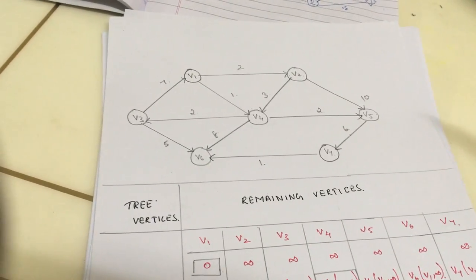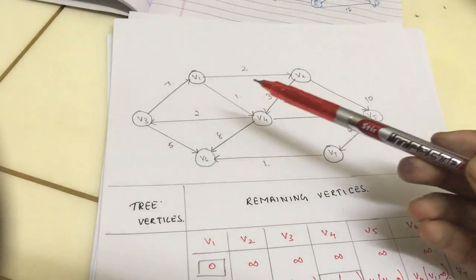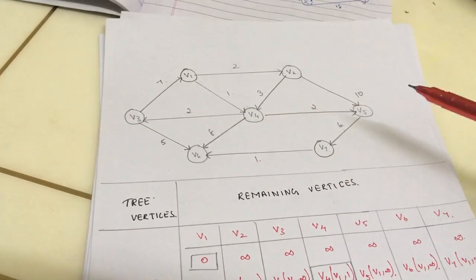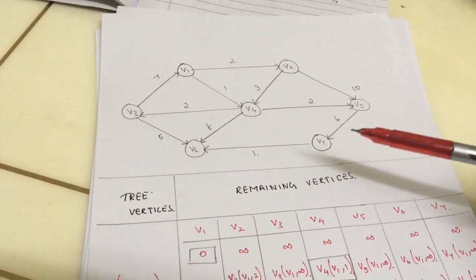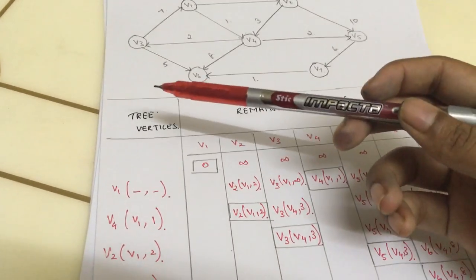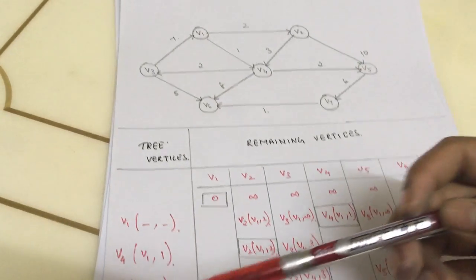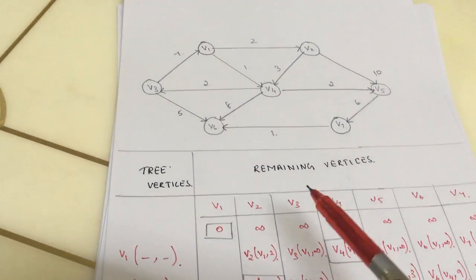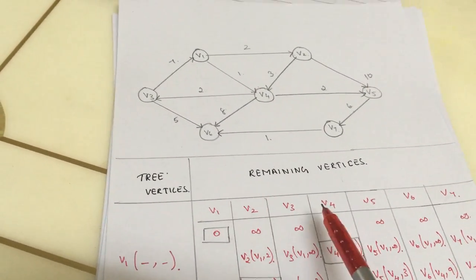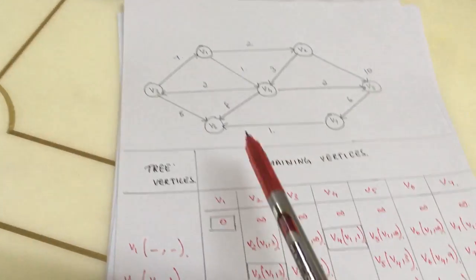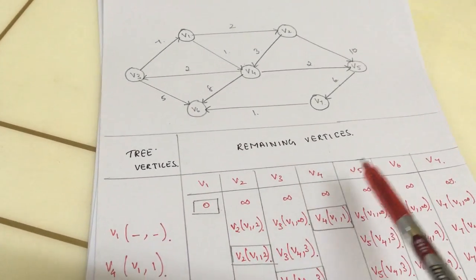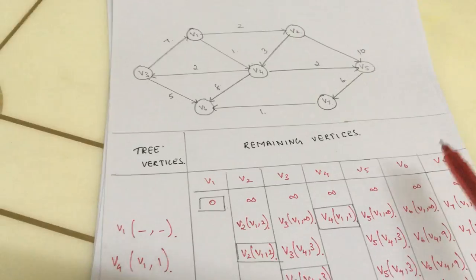We will see the second example with 7 vertices: v1, v2, v3, v4, v5, v6, and v7. We will construct a table with a column for vertices and the remaining vertices. In the remaining vertices column, we will write all the vertices: v1, v2, v3, v4, v5, v6, and v7.